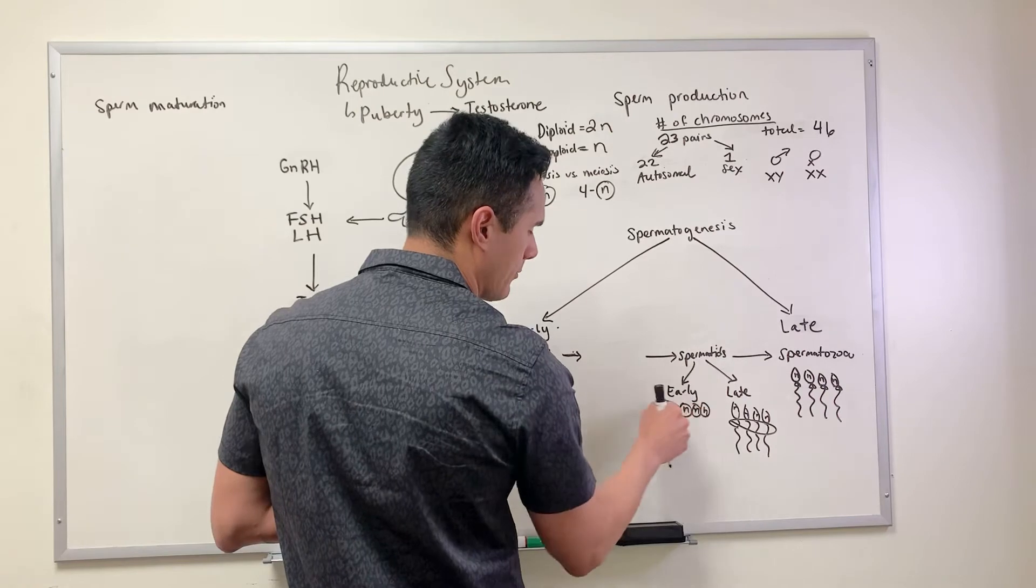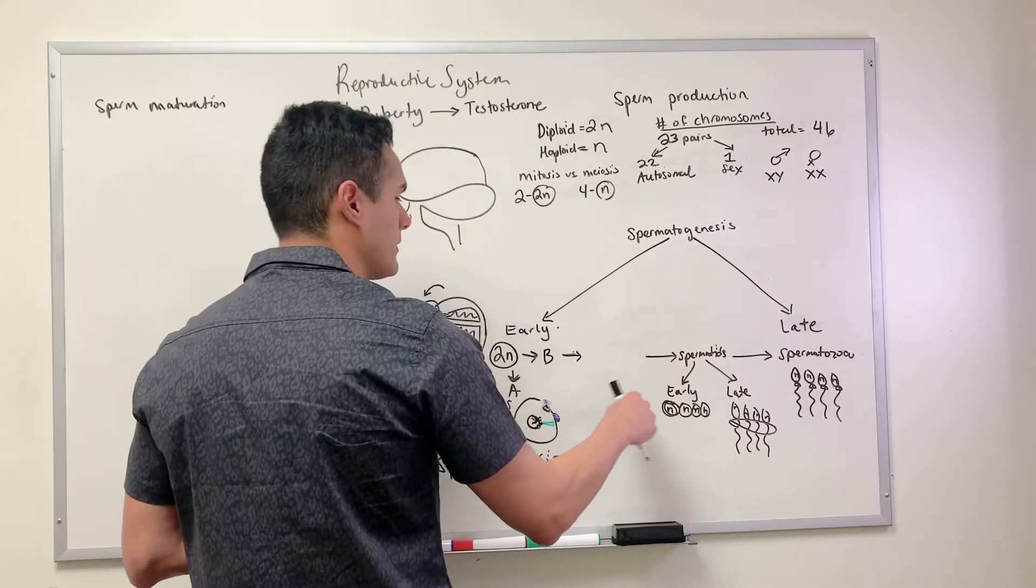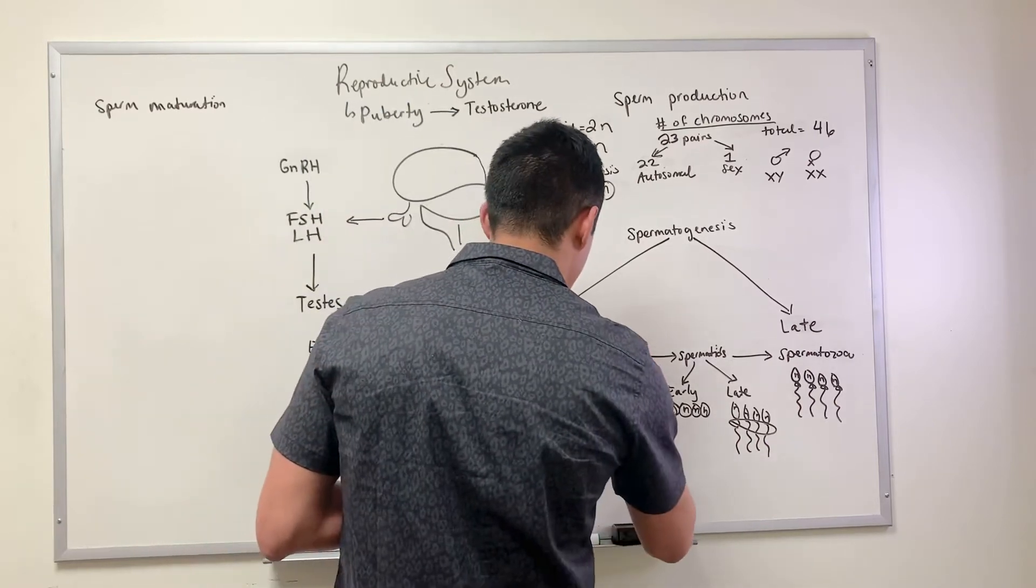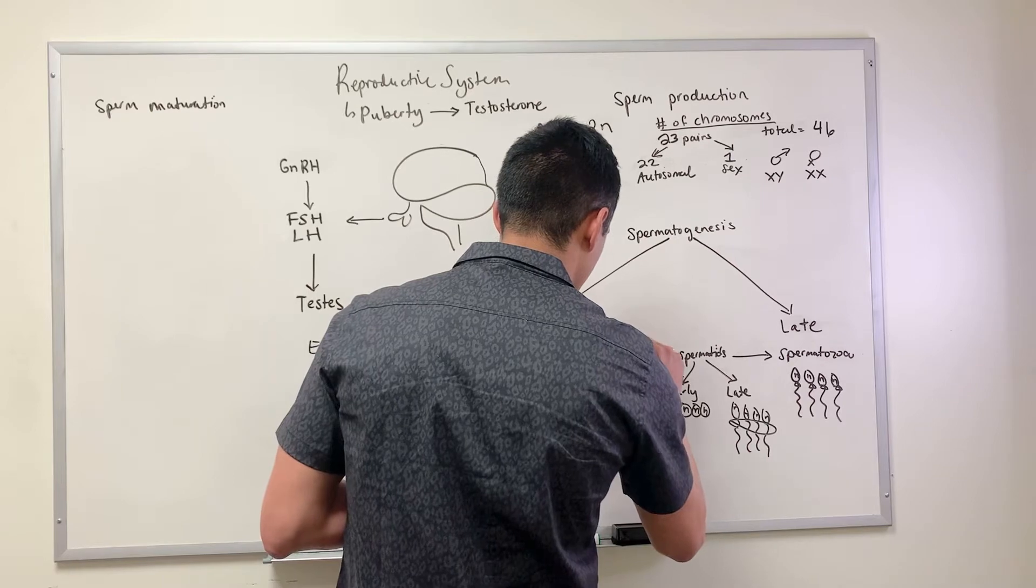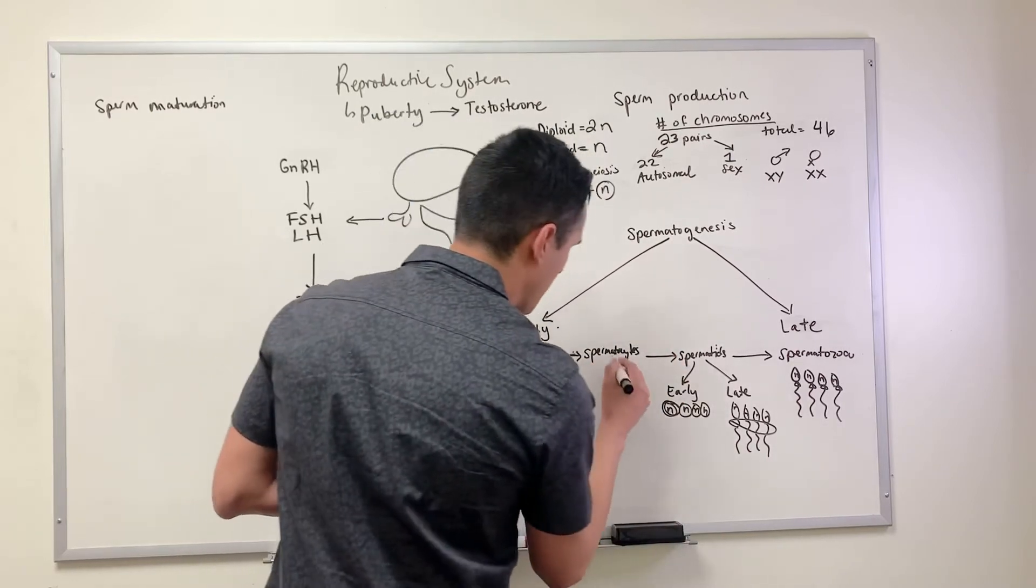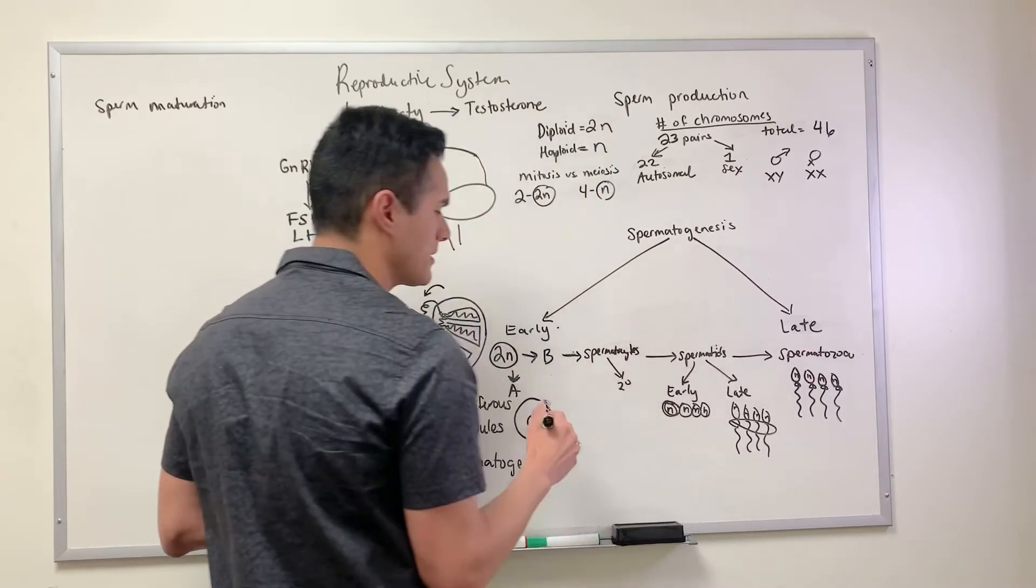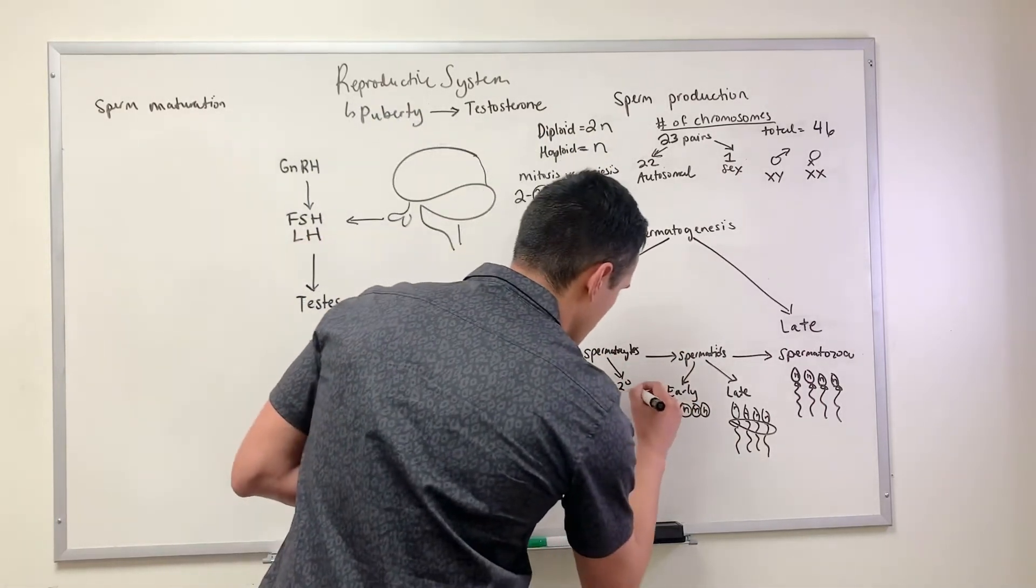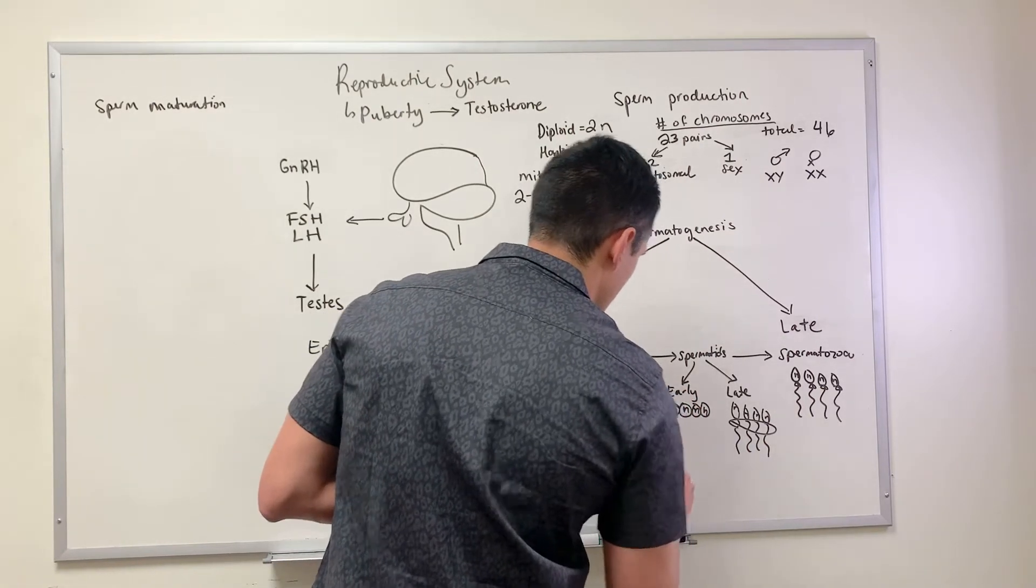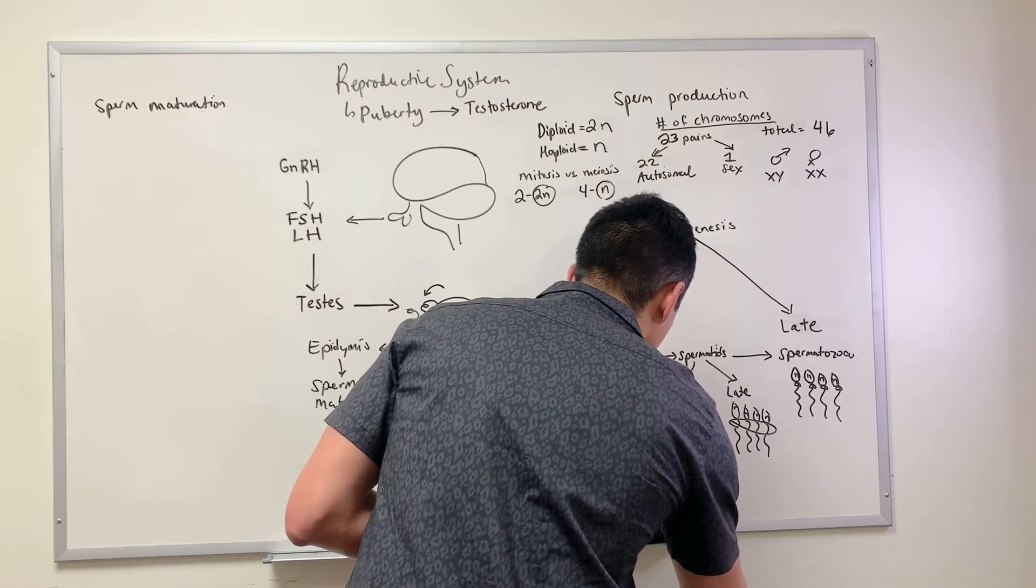In order to produce these four haploid gametes, they have to develop from what's known as spermatocytes. The secondary spermatocytes are going to develop into the early spermatids, and at this point this is when we complete meiosis II.